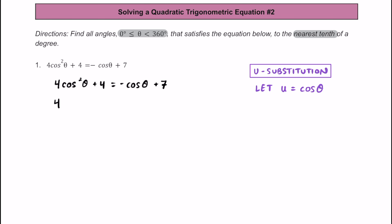Cosine squared of theta is basically just going to be u squared, so it's going to be u to the second power, and we're going to add four. That's going to be equal to negative u plus seven. Now remember that when we solve quadratic equations, we typically like to write them in standard form and set them equal to zero. So I'm going to add u to both sides of the equation, and then subtract seven from both sides so that we can get everything equal to zero.